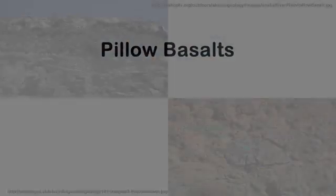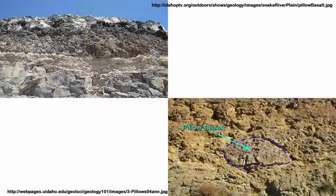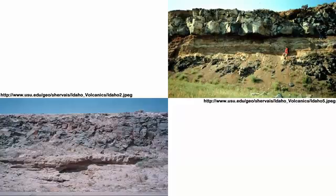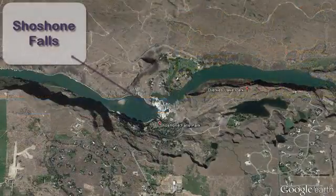When a basalt flow runs into a lake or river, it commonly breaks up into small blobs of lava called pillows. These pillows were formed tens of thousands of years ago when a basalt flow spreading northward ran into the Snake River, clearly before the river had eroded its canyon. Pillow basalts occur at many other places in the Snake River Plain — for example, they are commonly found where Lake Idaho once stood.